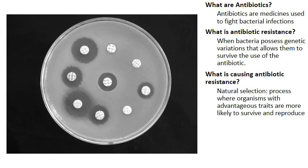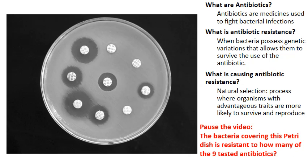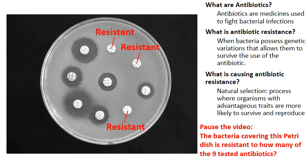Here's an actual picture with nine different cotton discs, each soaked in a different antibiotic. How many of the nine tested antibiotics is the bacteria covering this petri dish resistant to? The bacteria are resistant to three different kinds of antibiotics. This is a great example of a multi-drug resistant bacterial infection — one bacteria infection resistant to three different kinds of antibiotics.